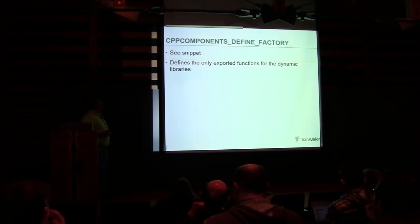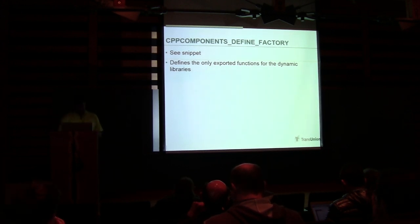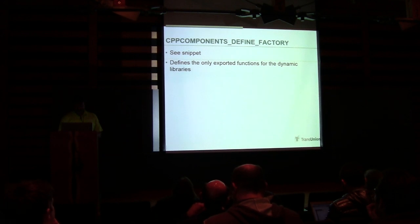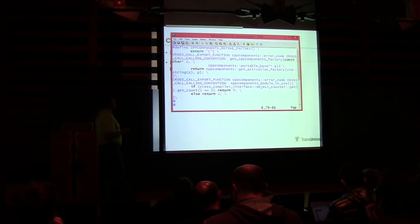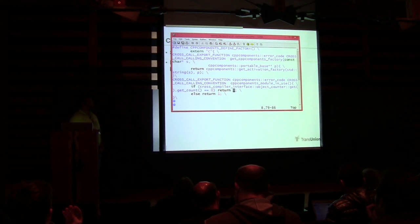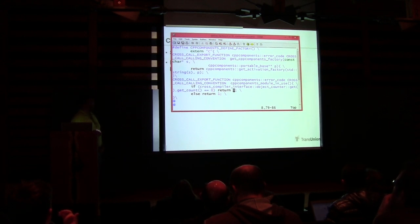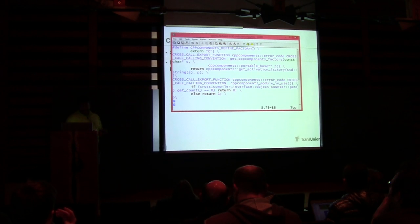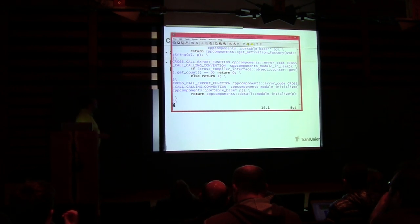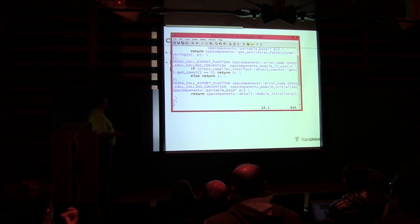CPP components define_factory defines our exporter functions — the only three functions actually exported from the library. Something called get_components_factory says: pass me a character string, get me back the components factory — something that'll provide the factory and static interfaces. Something that says: am I still in use, do I have outstanding reference counts? And then module_initialize, which we'll go over what that's used for in a bit.